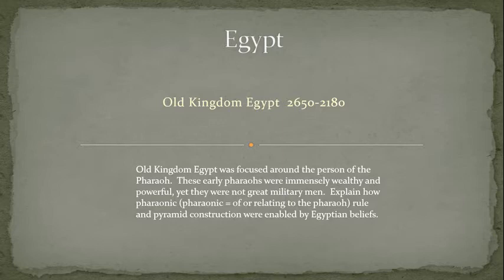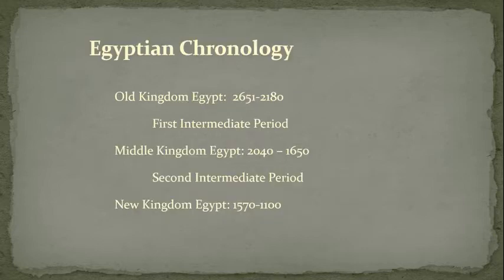Let's start by looking at chronology. I call this Old Kingdom Egypt. From very early times, even in ancient times, Egyptian chronology was broken down into periods. Today we're going to be looking at Old Kingdom Egypt first and then Middle Kingdom Egypt. In future weeks, we'll at least reference New Kingdom Egypt.